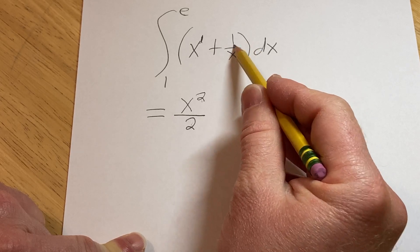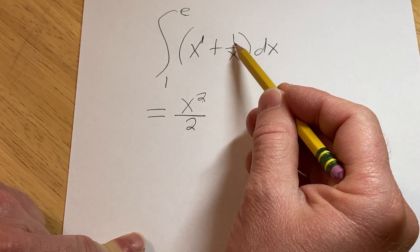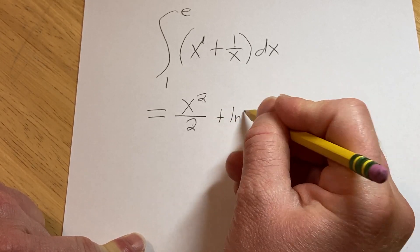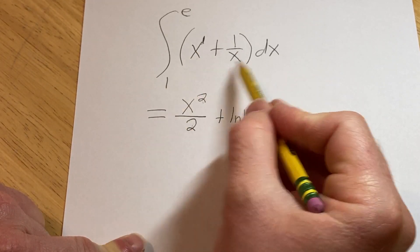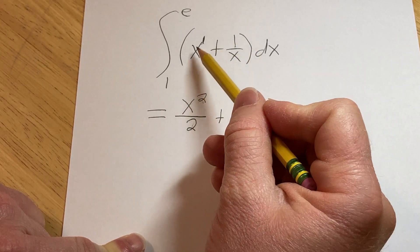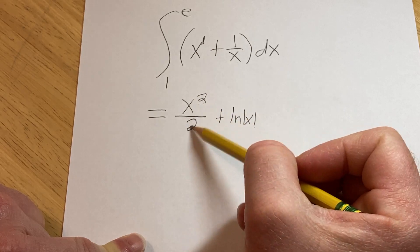For this one here there's a special formula that says whenever you have 1 over x you're always going to get the natural log of the absolute value of x. So we just used two different formulas. This is equal to this and that is equal to this because you add 1 and divide by the result.